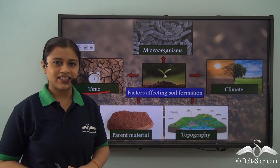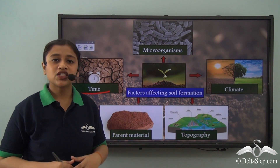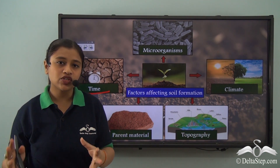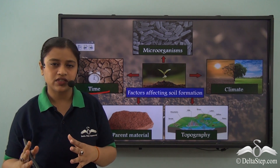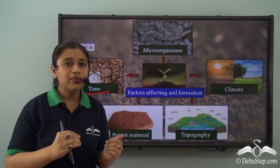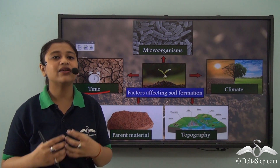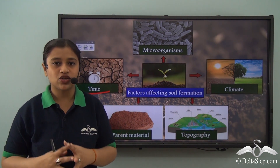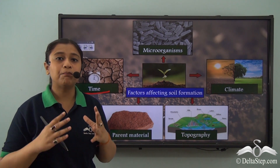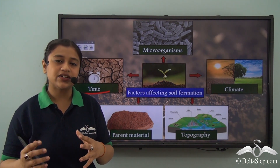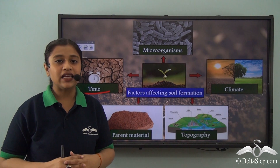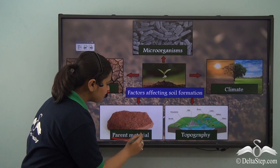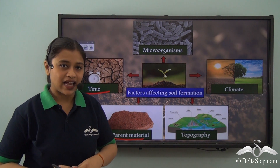The second factor is the parent material. The rock which leads to the formation of soil is very important. The soil type and properties of a certain soil can only be determined when we know from which rock the soil has been formed. So the parent rock or parent material plays an important role in the type of soil.